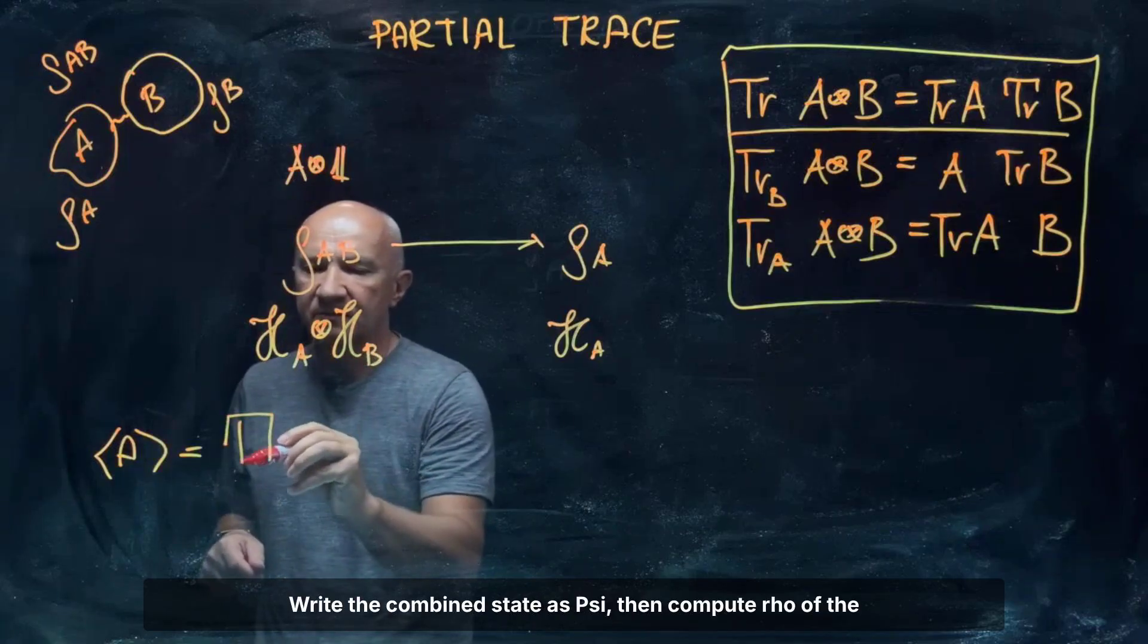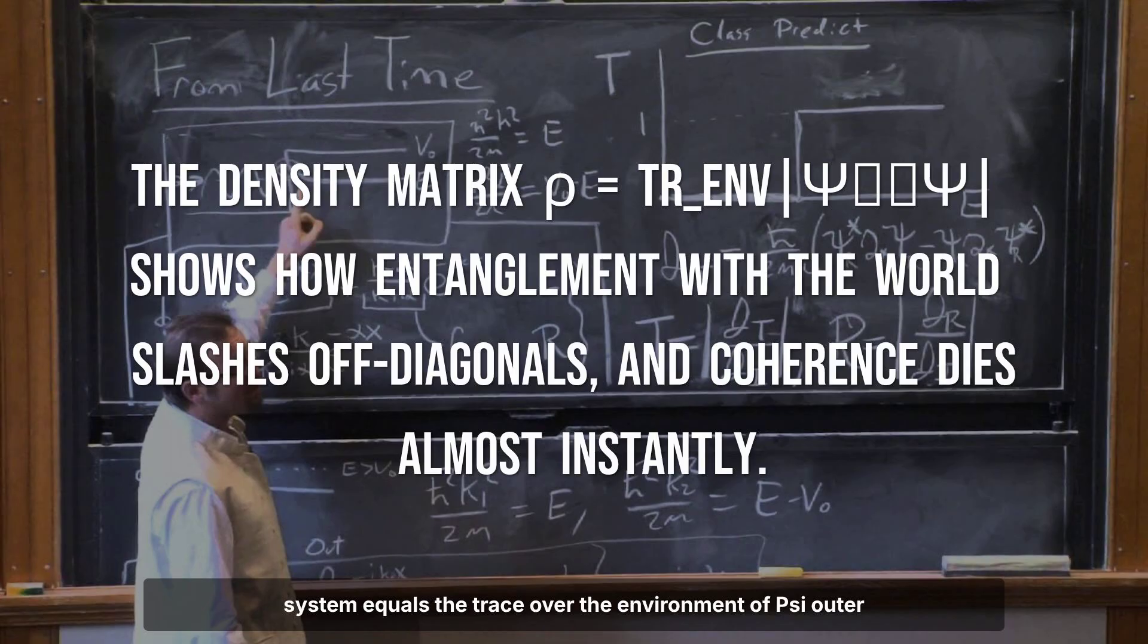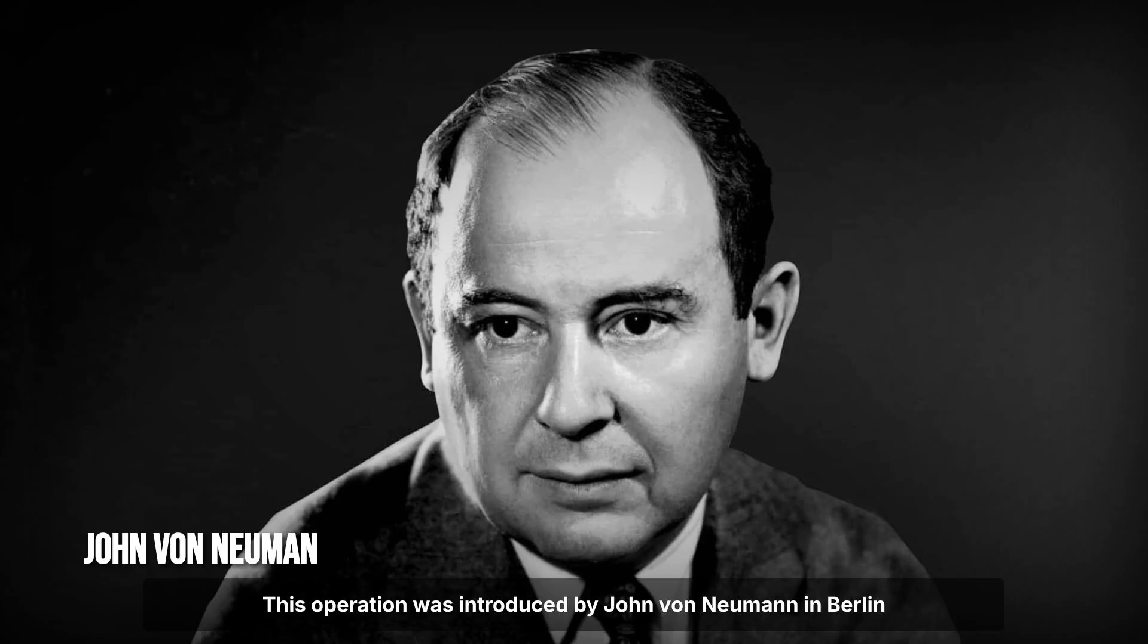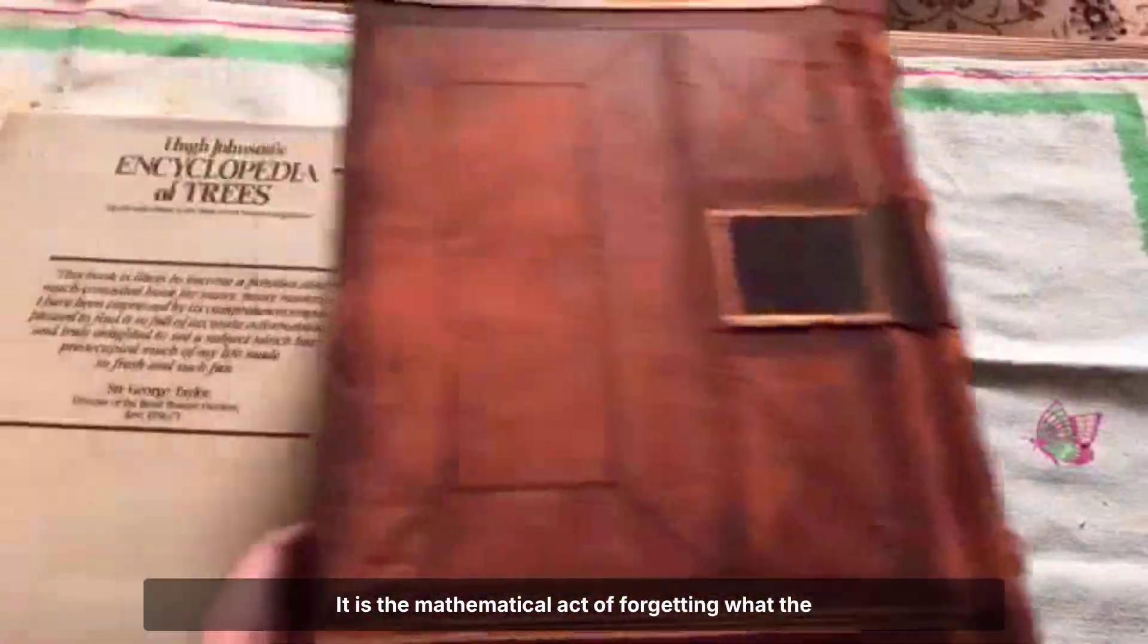Write the combined state as ψ, then compute ρ of the system equals the trace over the environment of ψ outer product ψ. This operation was introduced by John von Neumann in Berlin in 1932. It is the mathematical act of forgetting what the environment knows.